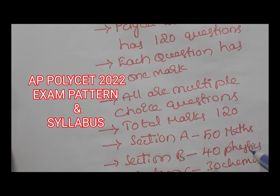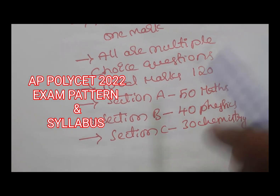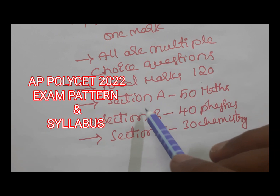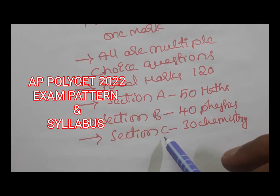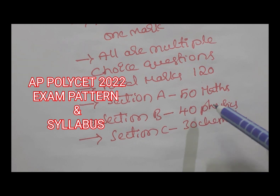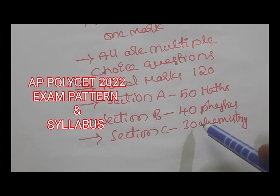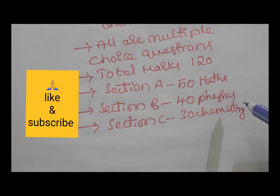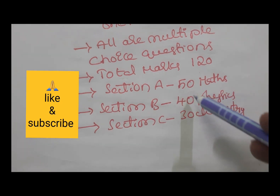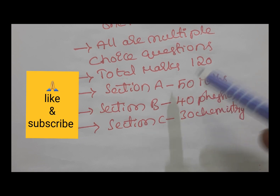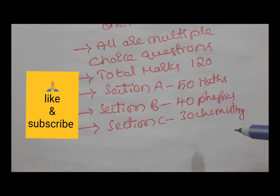So the total marks are 120. The question paper has 3 sections: Section A, Section B, and Section C. Section A covers questions 1 to 50 from 10th class Mathematics. Section B covers questions 51 to 90, that is 40 questions from 10th class Physics. The last 30 questions, 91 to 120, are from 10th class Chemistry. So 50 + 40 + 30 = 120 questions, carrying 120 marks. There are no negative marks.